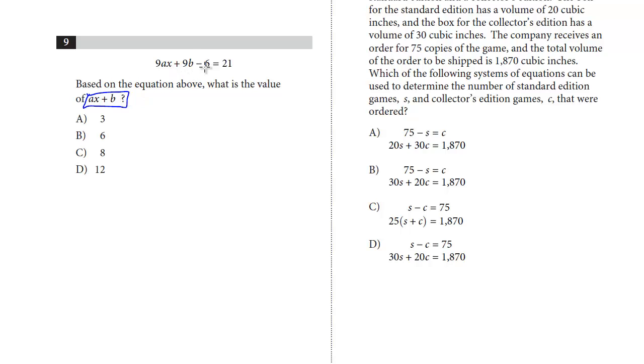Here's an ax plus b. The first step is let's add 6, so at least we have an ax and a b on the left side. So we're going to end up with 9ax plus 9b. If we add 6, we get 27. So we're getting closer.